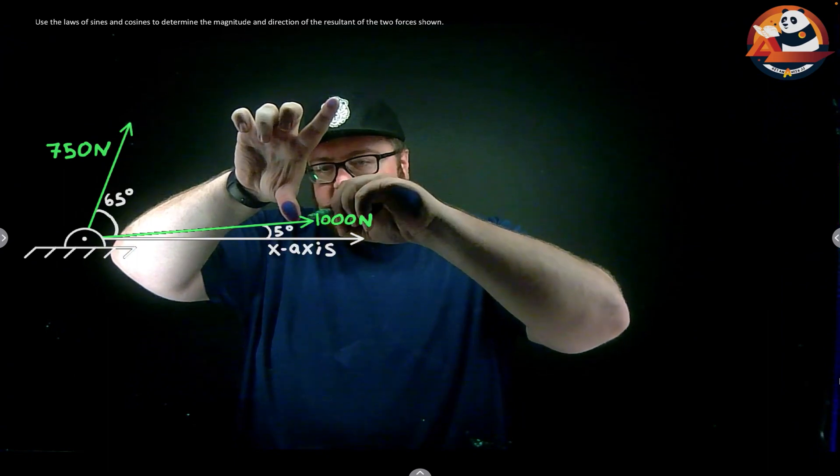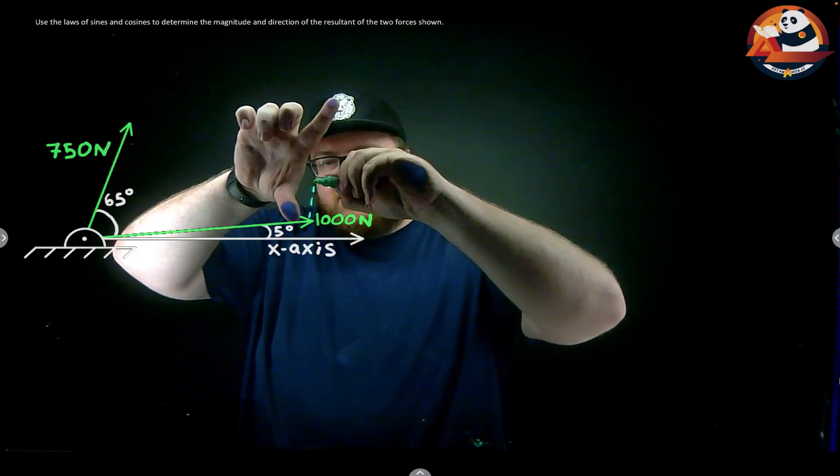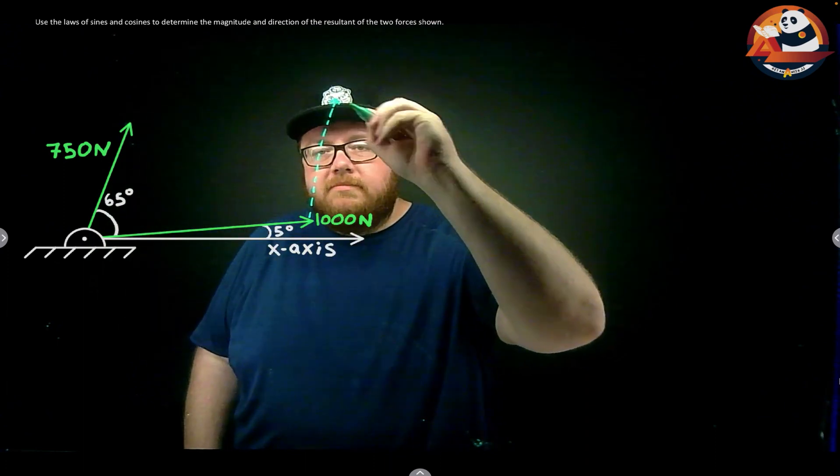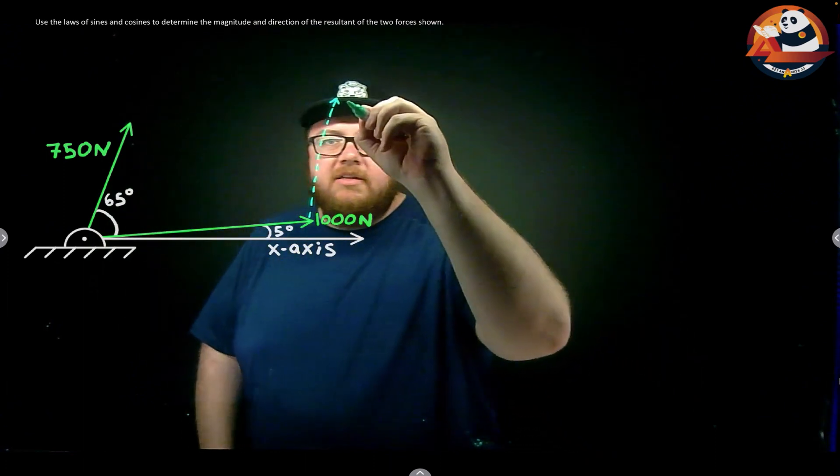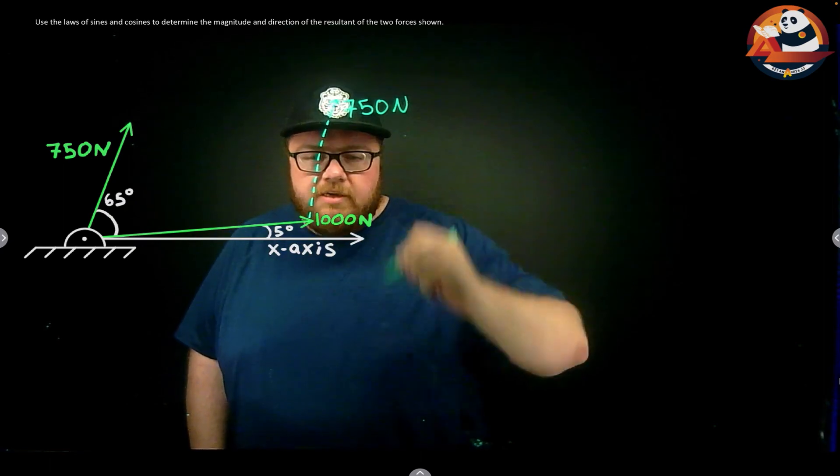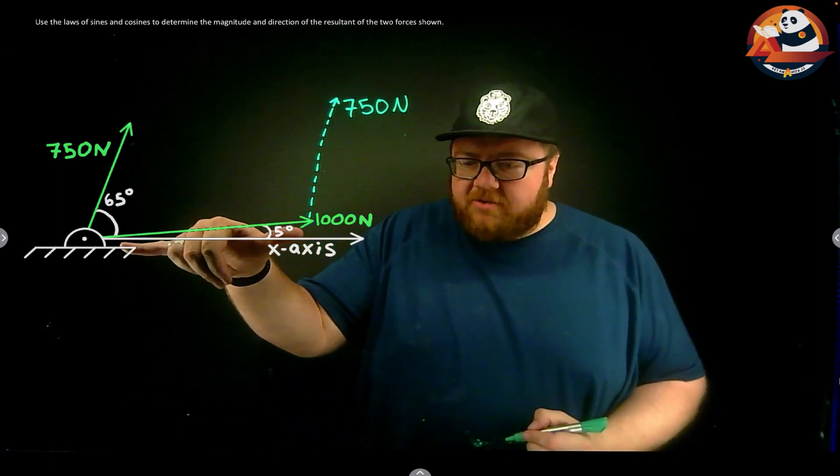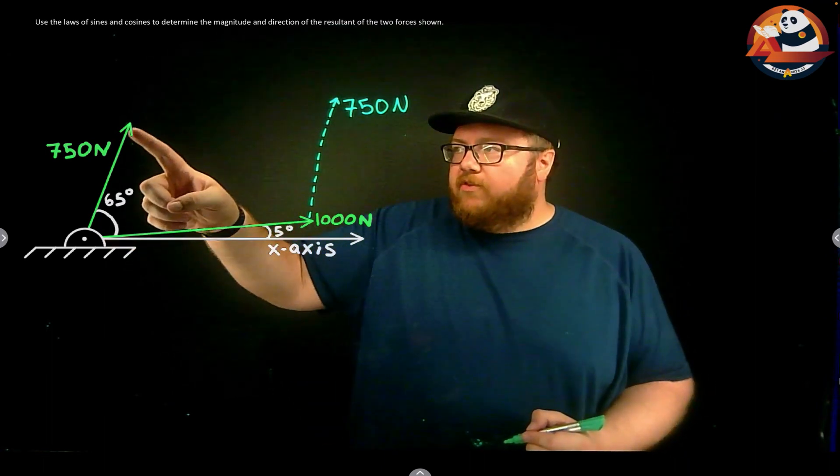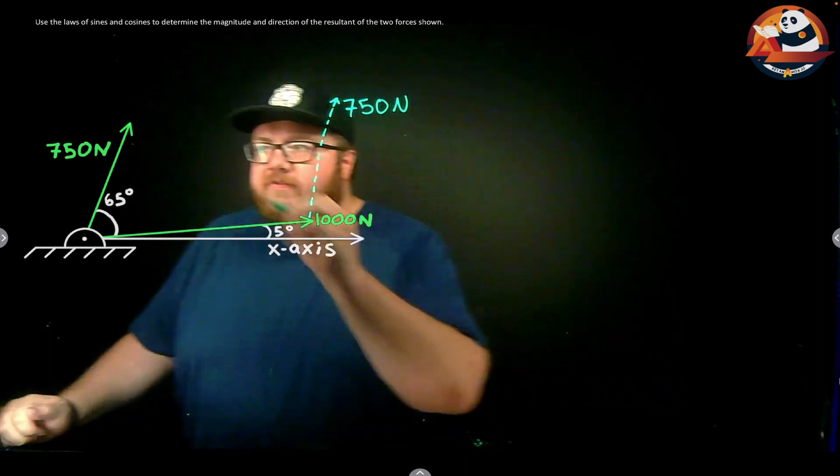We can come in and get that one sketched in. Our next force goes right here, just making a parallel vector, and its magnitude is still 750 newtons. Then we're going to do that same thing with our 1000 newton force - take it and just slide it up so that it touches from tail to tip of our last vector.